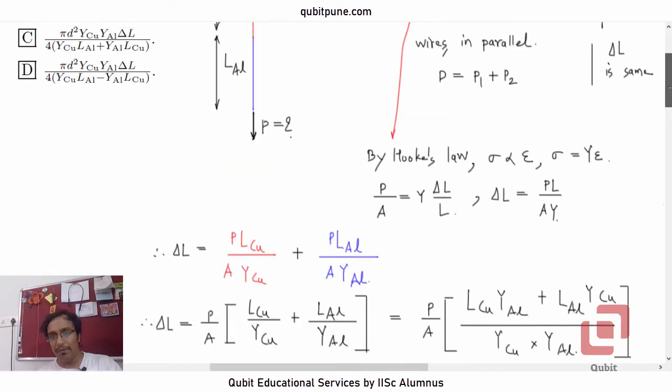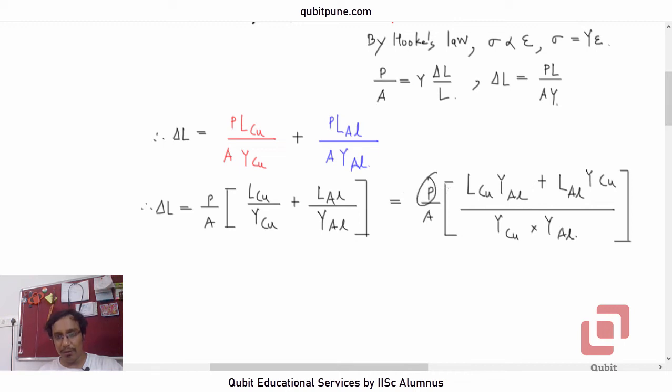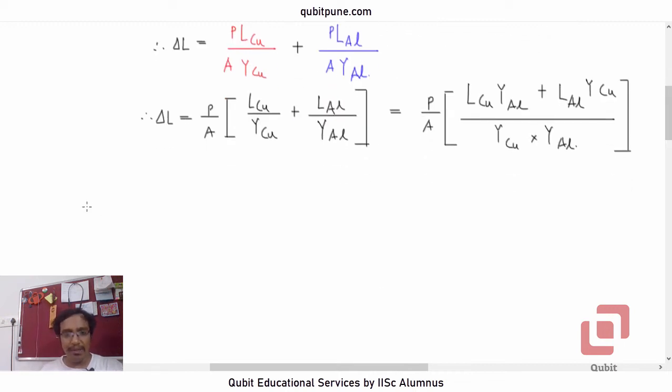What do we want? We want P. So, can we take it on one side? Yes. Let's keep P on one side and let's shift everything else on the other side. So, it will be delta L into A into Y_Cu into Y_Al upon L_Cu Y_Al plus L_Al Y_Cu.